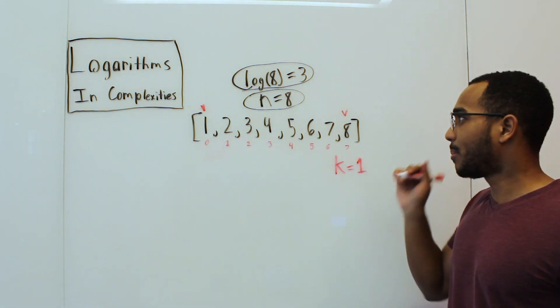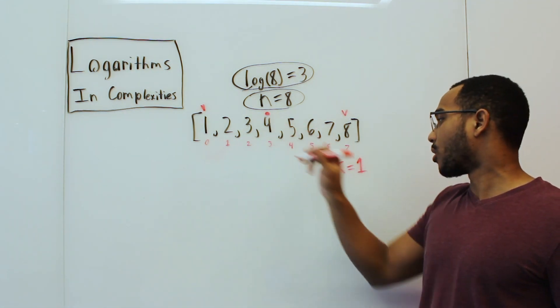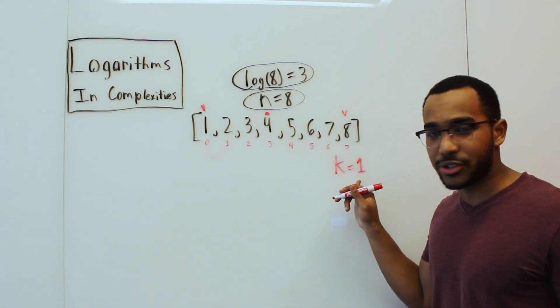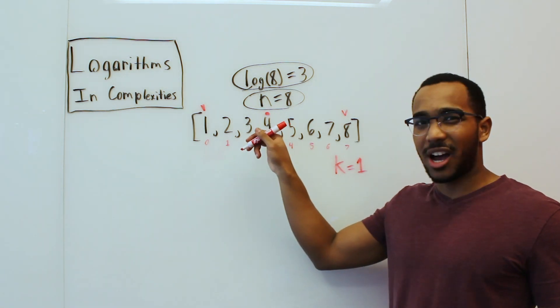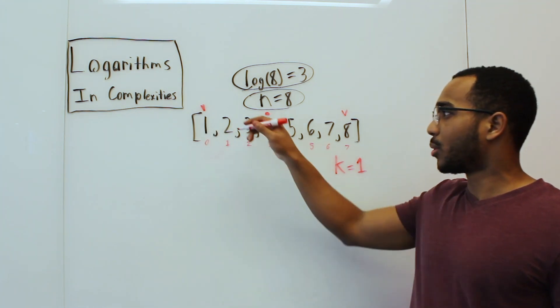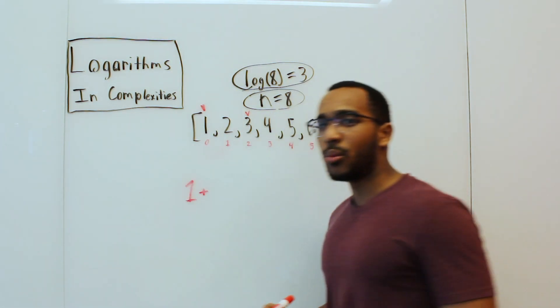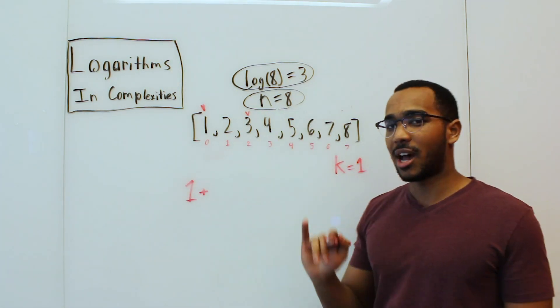So we just set our bounds, and our midpoint is going to be right there. We see we hit four. Is four the value one that we're searching for? It's not. We overshot it. Since we overshot it, we need to look to the left. We want to go lower in value. So we're going to narrow the bounds. We were able to narrow our bounds one time.